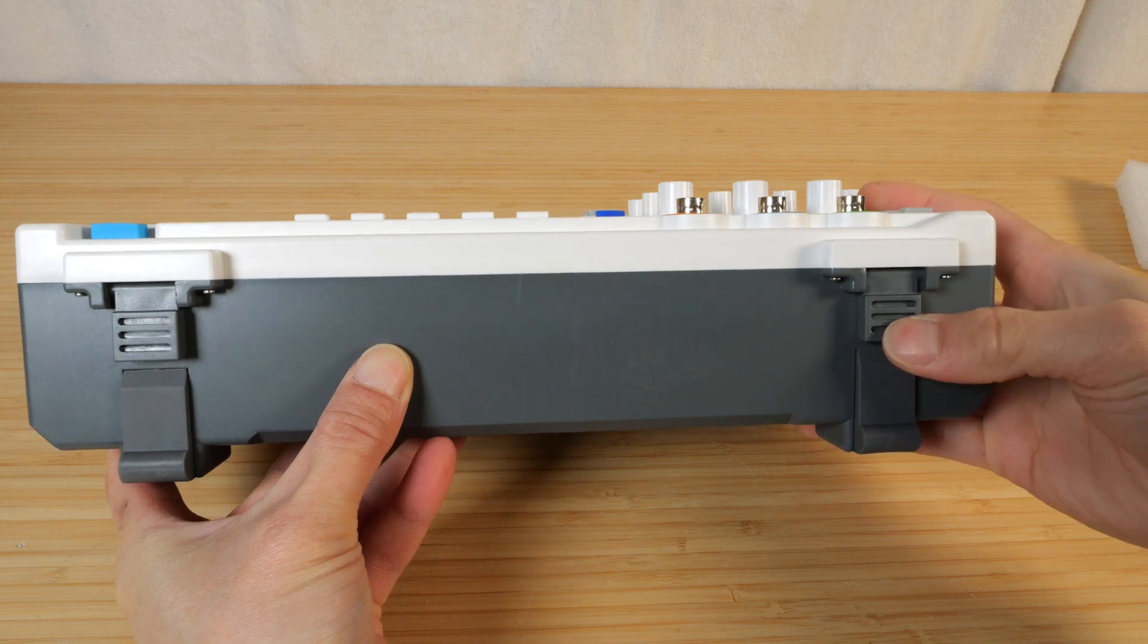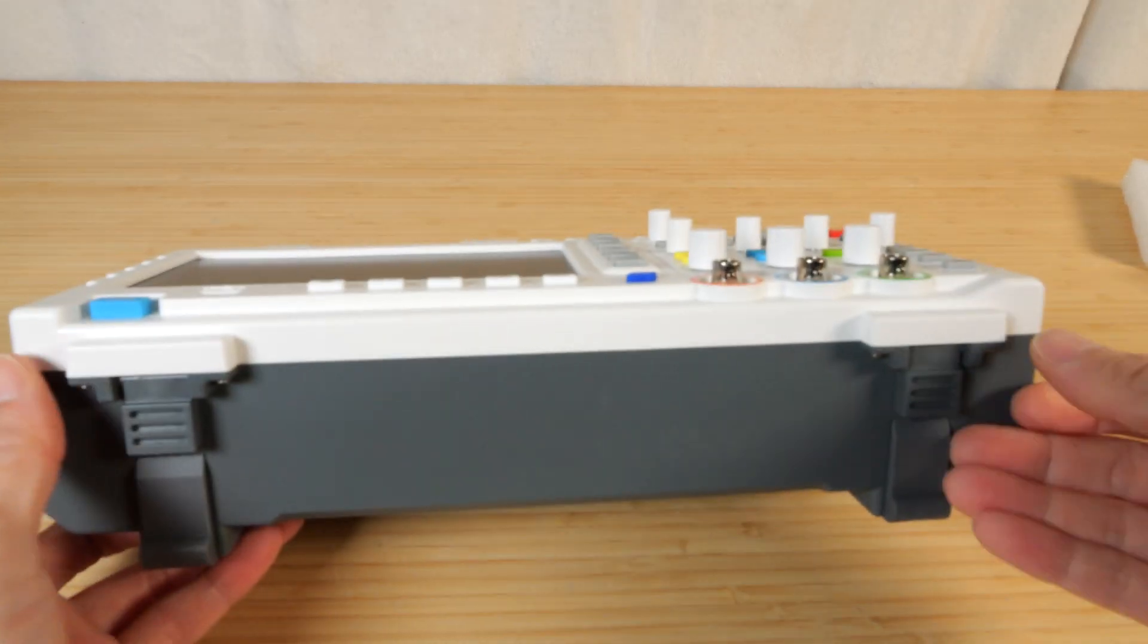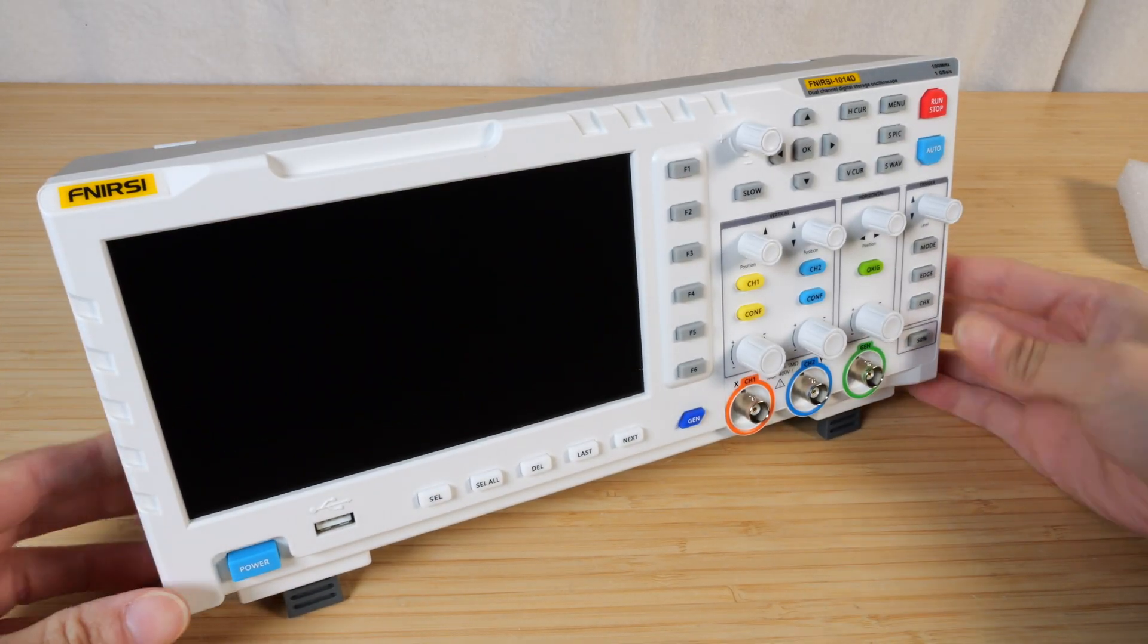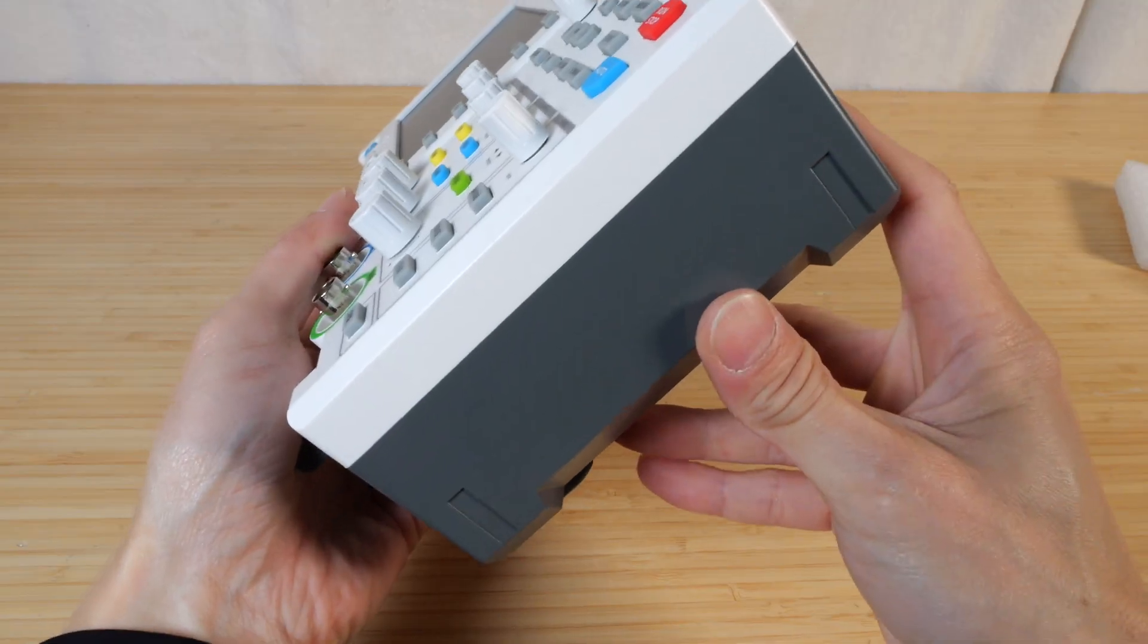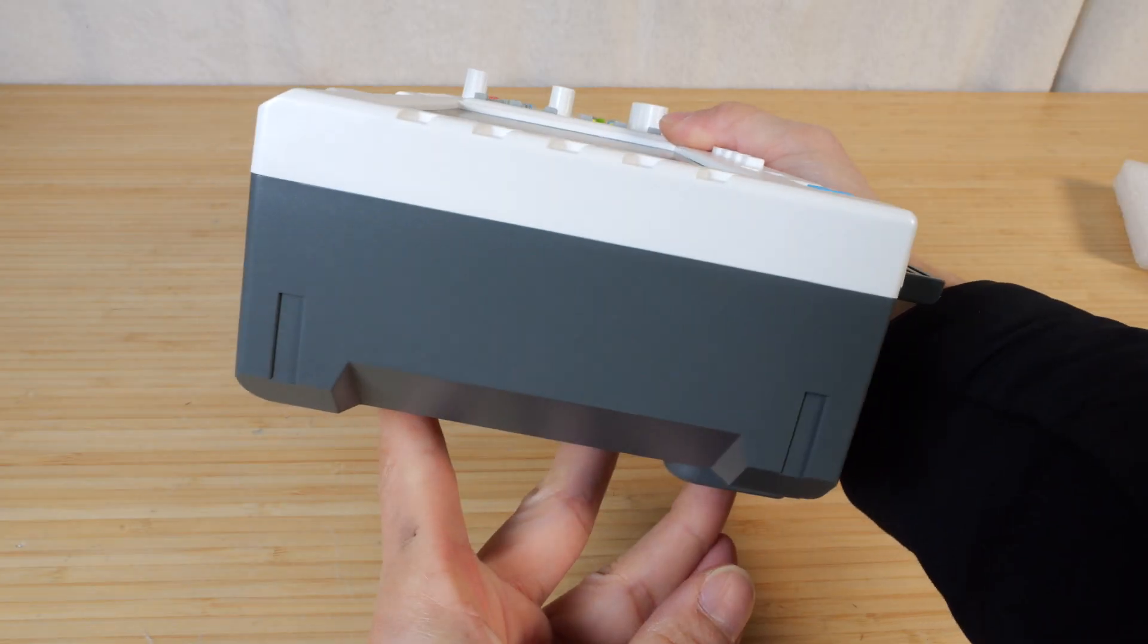The bottom has retractable feet. Towards the back, this is rubber dies, so it can stand up. Kind of grips the desk a little bit. On the right side, there's nothing. On the left side, there's also nothing.